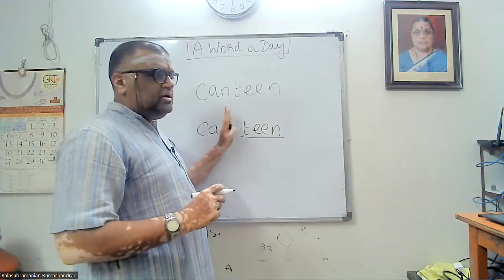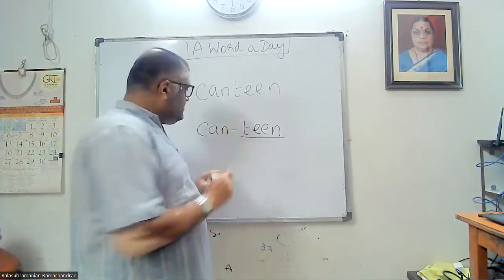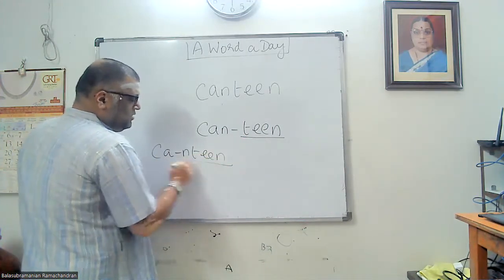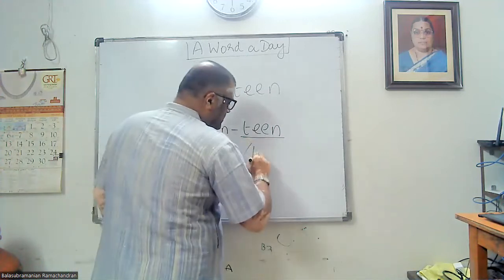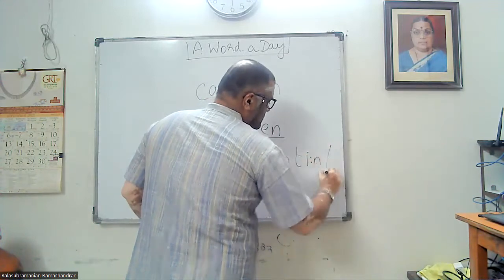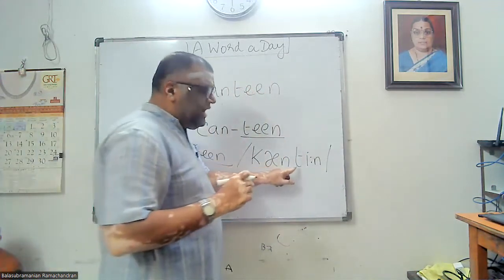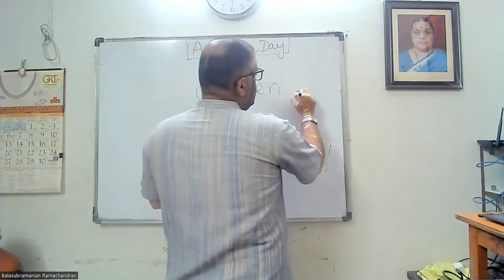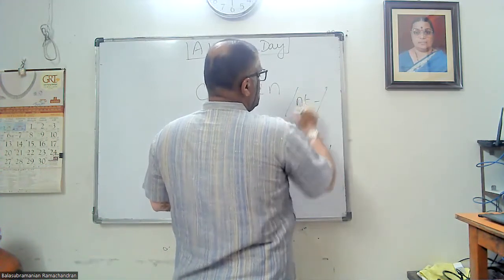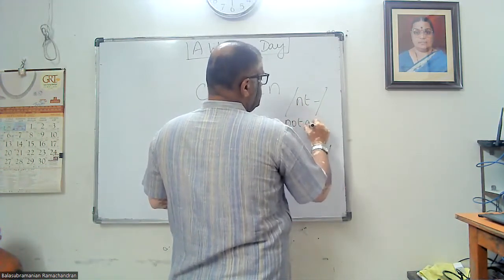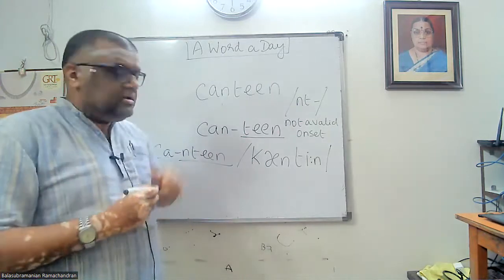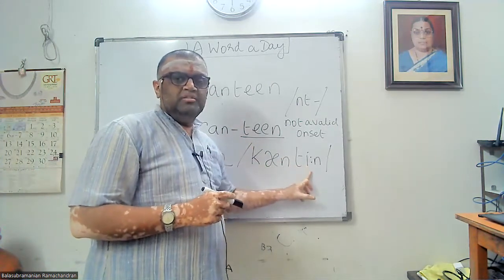Now, why do we say the syllable division occurs here? Why can't it divide differently? Look at the transcription: it's 'can-teen.' The cluster 'ntr' is not a valid onset — 'ntr' cannot occur before this vowel sound 'ee.' So this consonant cluster cannot come before the vowel as an onset. It is not a valid onset.